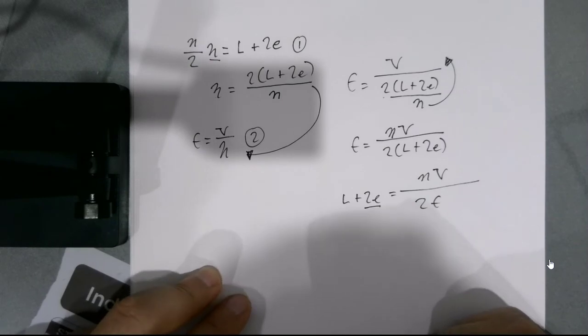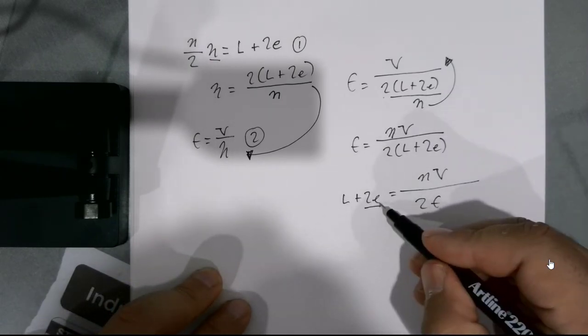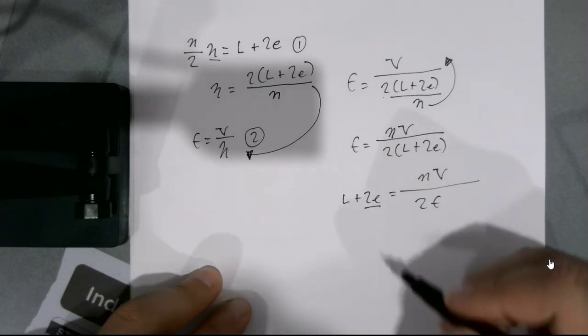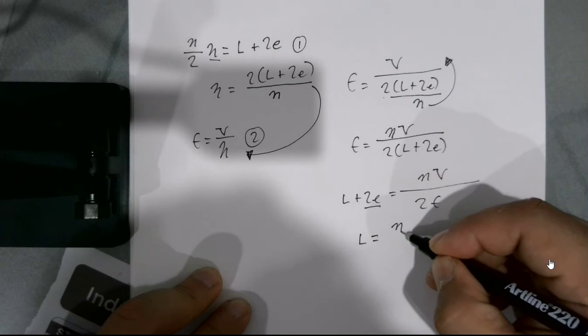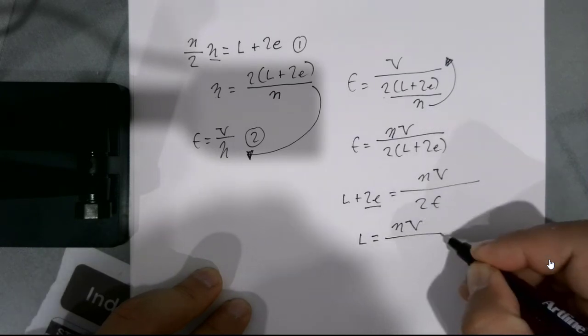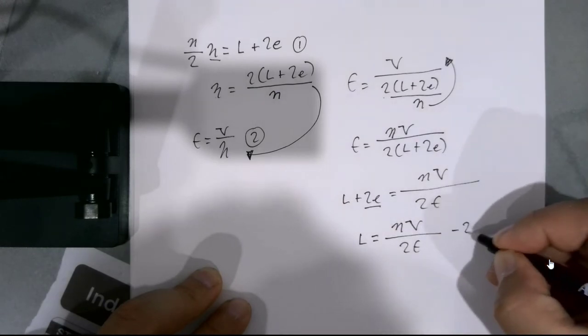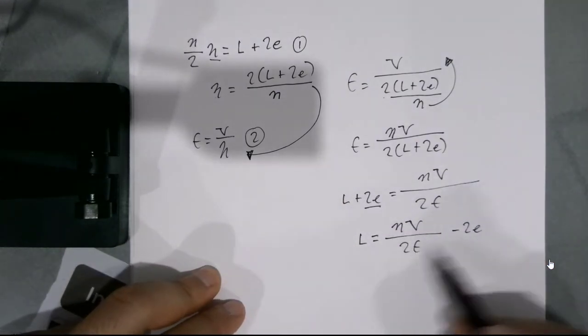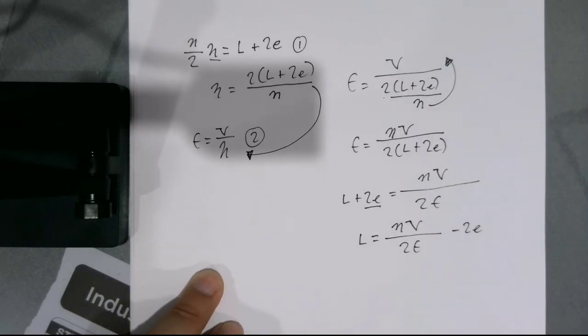Now you've got this factor here. You could probably add that factor there if you've got the diameter of that particular pipe. So we find that the length is equal to n multiplied by V divided by F minus two E. And that's definitely something that you can do there.